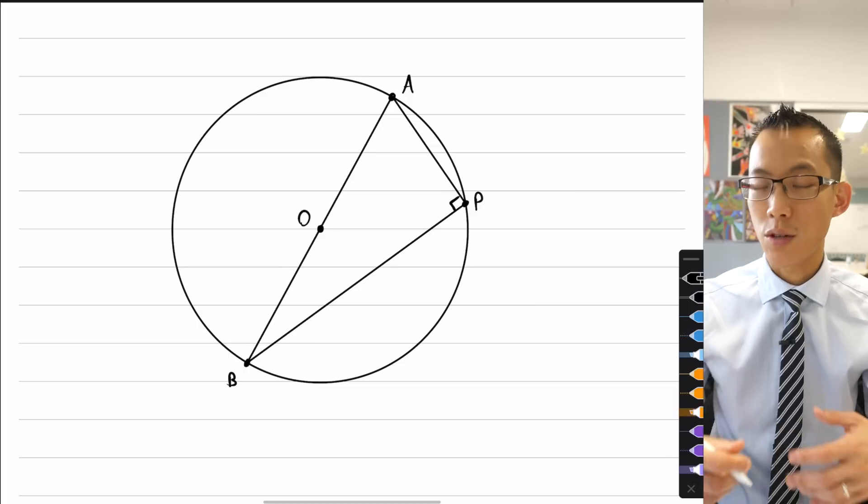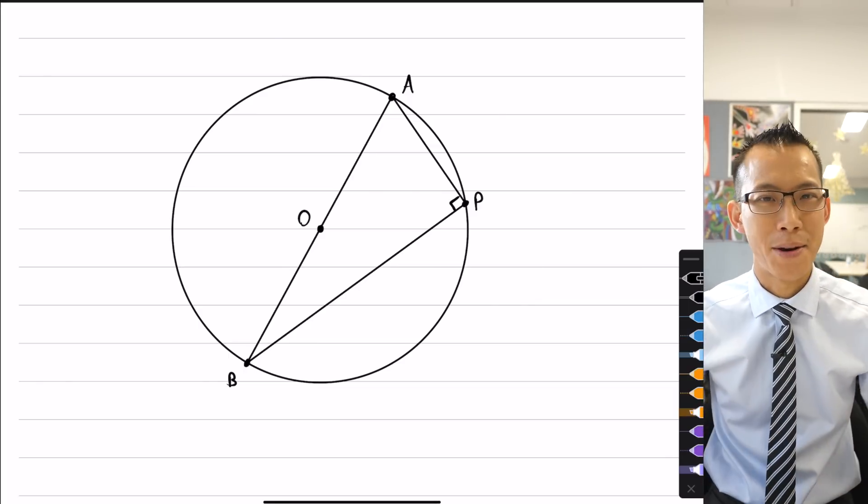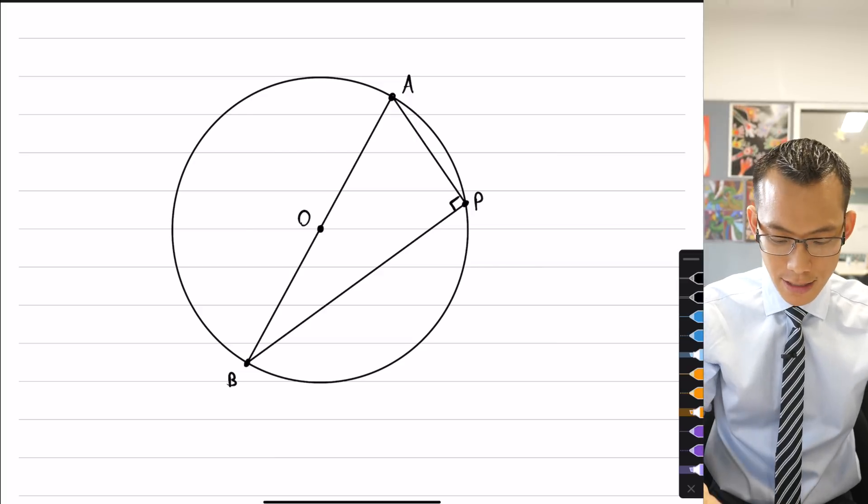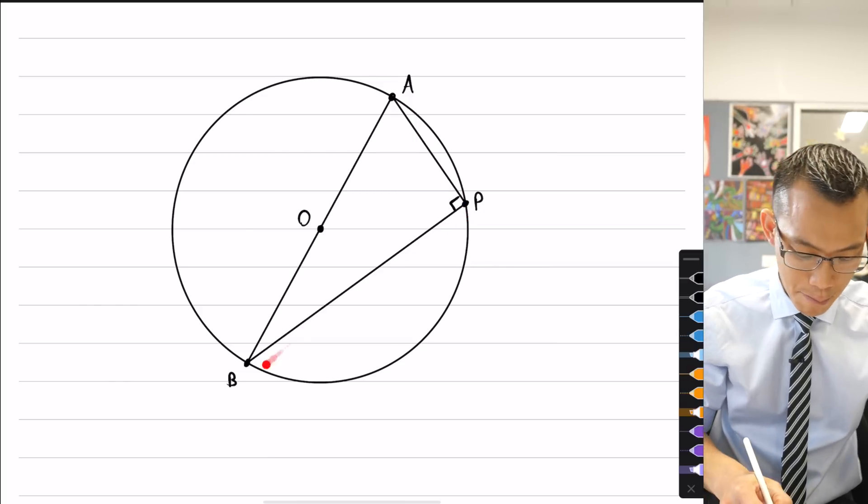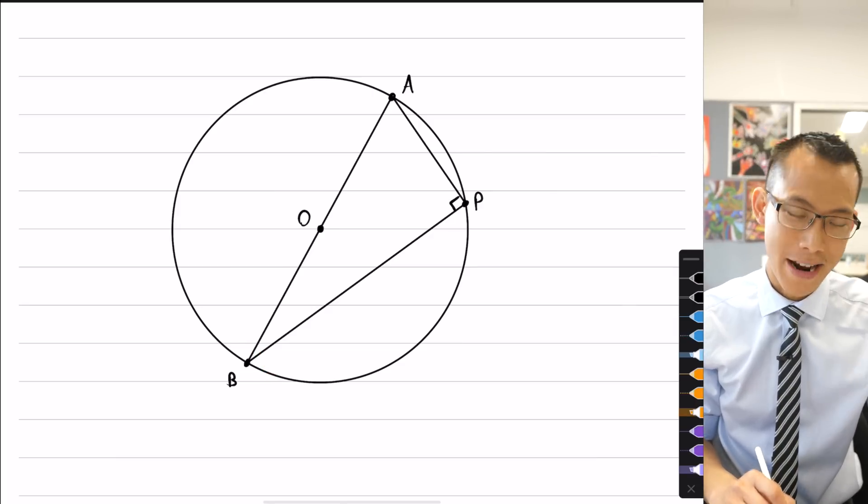So this sort of geometric feature that we notice here, because it is true wherever P is on the circumference, one of the ways that we can phrase this is that the angle in a semicircle, because AB, the diameter, creates two semicircles, but the angle in the semicircle, in this case, APB, it's always going to be 90 degrees. It's always going to be a right angle.